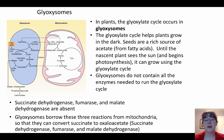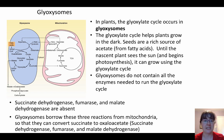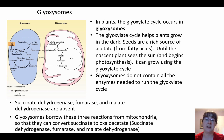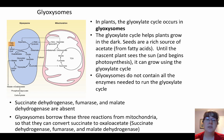Plants therefore have glyoxysomes to handle all of those mechanisms. However, glyoxysomes don't have all the enzymes they need on their own. This specialized pathway is actually coupled between the glyoxosome and the mitochondria, because you need enzymes in the mitochondria — succinate dehydrogenase, fumarase, and malate dehydrogenase — to make it all work. So this pathway is intimately connected between these two organelles.